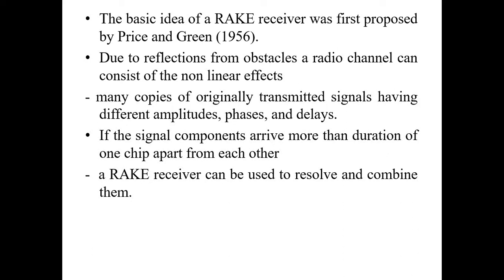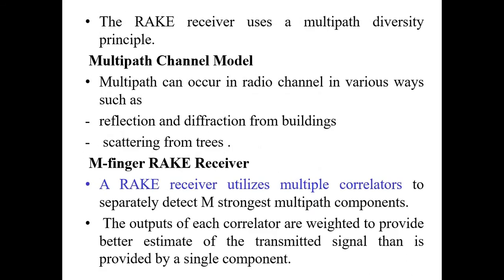The main concept is: if the signal components arrive more than the duration of one chip period — chip period means in one unit time how many bits can be transmitted, the time taken to transmit bits in one unit time, which we call the chip rate or chip period — the RAKE receiver can be used to resolve this by correlating and combining these all to further estimate the correct version of the signal. The RAKE receiver uses a multipath diversity principle.